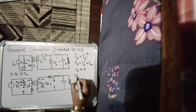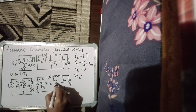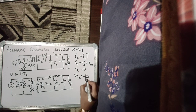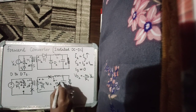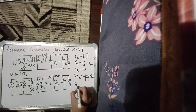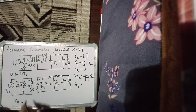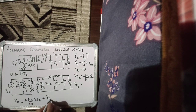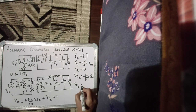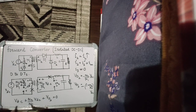In the first interval, D1 is conducting. The voltage across D2 is −(N2/N1)·VDC (blocking negative voltage, as expected for a diode). For D3, applying KVL: VDC + (N3/N1)·VDC + VD3 = 0, giving VD3 = −(1 + N3/N1)·VDC. The switch S and diode D1 are both conducting during this interval.